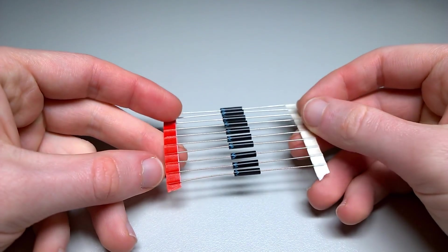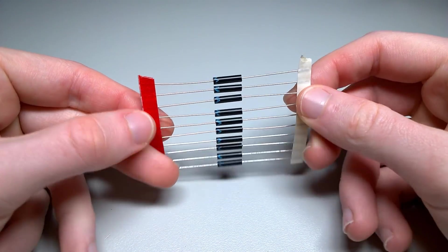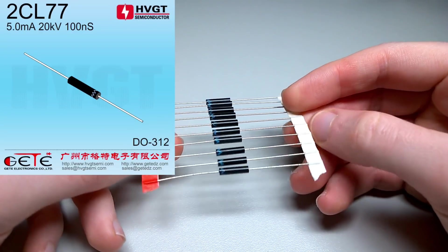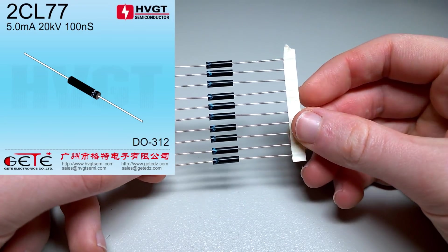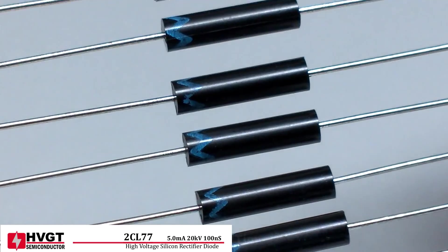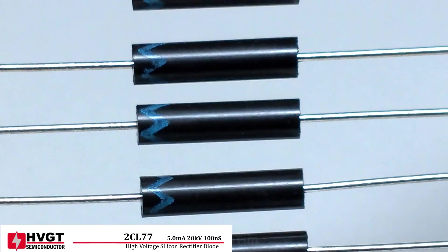Now the particular diode that I'm interested in today is this one here. This is a 2CL77 20kV 5mA diode. This one's manufactured by HVGT Semiconductor and I'm rather interested to see how this is constructed inside.